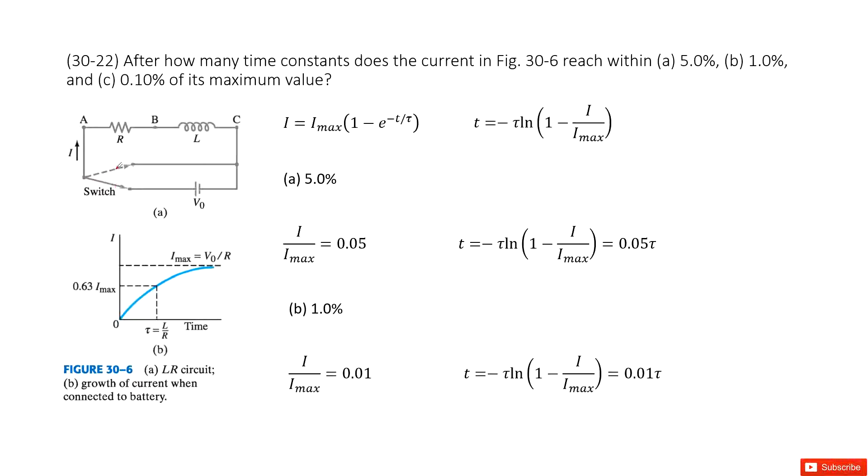And this one, you can see we have this RC circuit. When we adjust the switch, when the switch comes to V0, how the current changes in this circuit. The picture looks like this one. We can see the growth of current when connected to the battery.